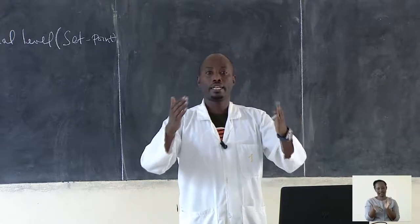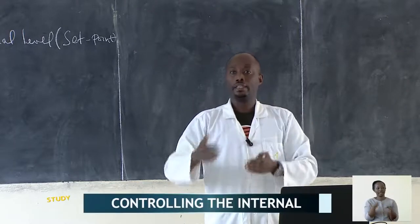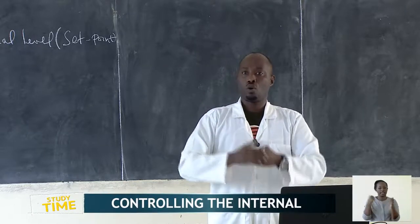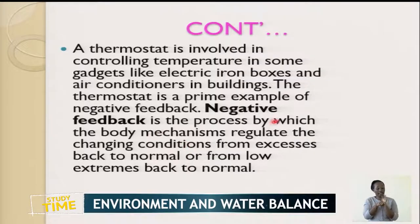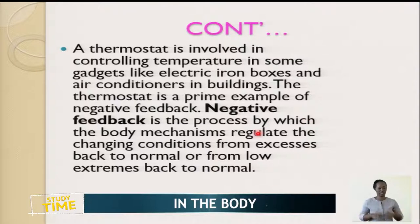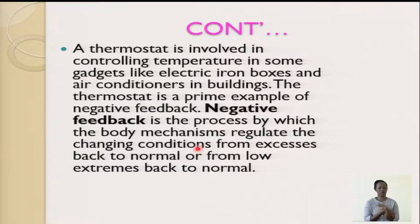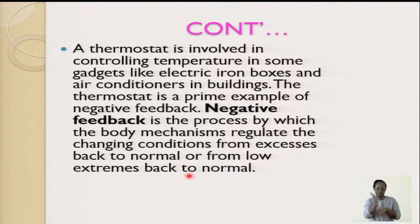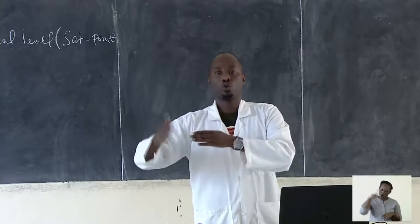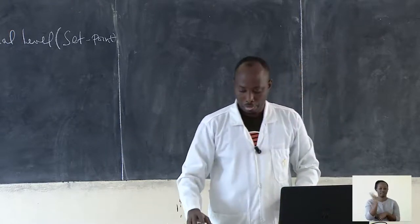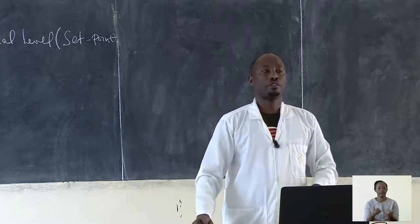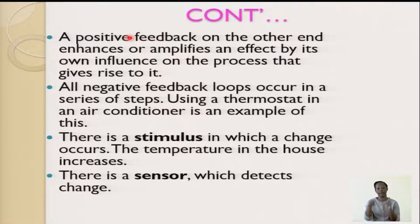Negative feedback is responsible for decreasing the effect that causes body temperature or glucose level to be raised. Negative feedback is a process by which the body mechanism regulates a changing condition from excess back to normal or from low extremes back to normal. From high, bring it back to normal. From low, you also turn it to normal. That is referred to as a negative feedback mechanism.